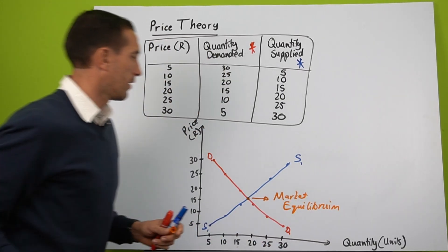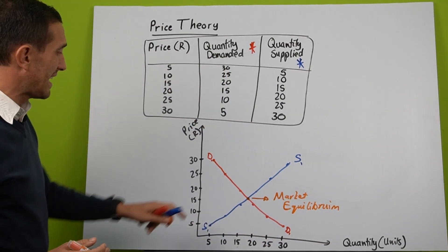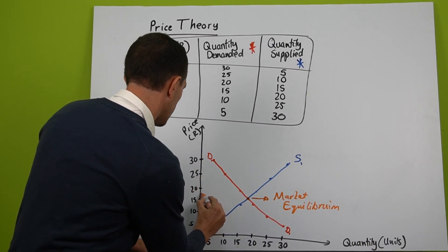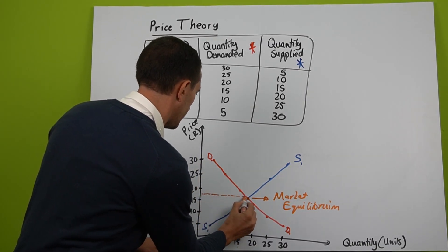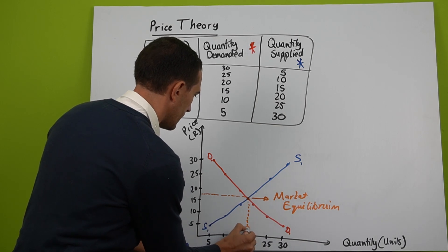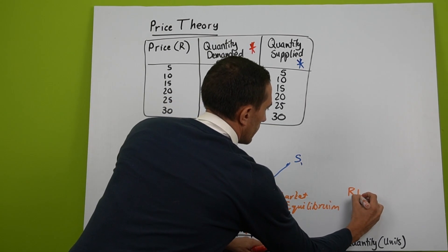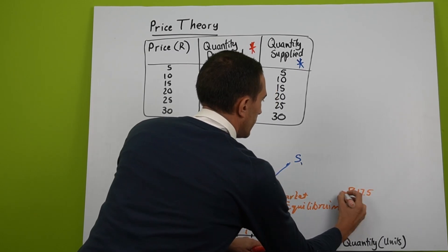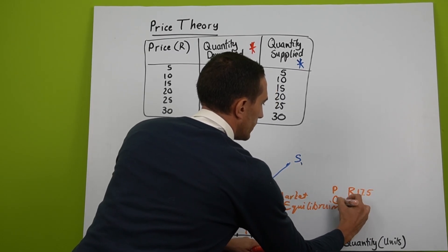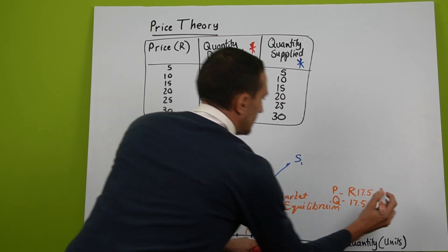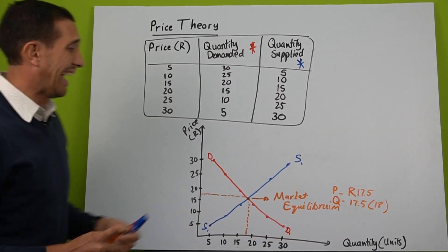This is where supply and demand meets, and this is what we call market price. So currently this will be 17 rand 50 for 17 and a half units. So 17.50 is my price and my quantity is then 17 and a half, or you can say 18.